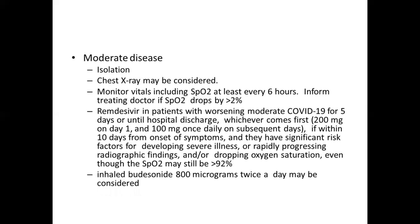For moderate disease, isolation should be done, chest X-ray ordered, and oxygen saturation monitored every six hours. Start remdesivir for worsening moderate COVID-19 for five days or until hospital discharge, whichever comes first. The dose is 200 mg on day one, followed by 100 mg once daily for the subsequent four days, if the patient presents within 10 days from onset of symptoms with significant risk factors for severe illness, rapidly progressing radiographic findings, or dropping oxygen saturation. Also start inhaled budesonide 800 micrograms twice a day.